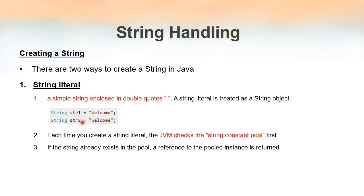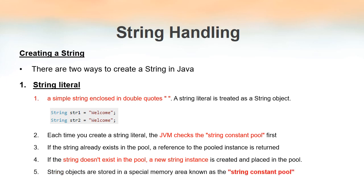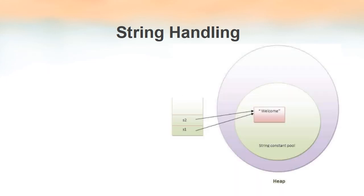If the string does not exist in the pool, a new string instance will be created. But if the string already exists, a new string will not be created; instead, the new literal variable will be pointed to the already existing string. String objects in Java are placed in a special memory area known as the String Constant Pool.